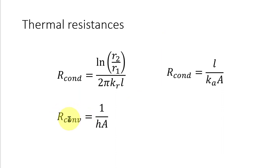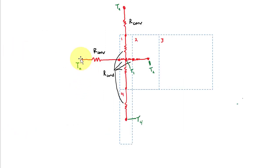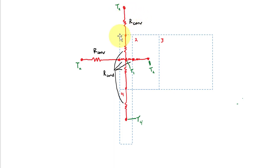Finally, we have the thermal resistance due to convection: 1 over the convection coefficient h times the surface area. Depending on which surface we're calculating, if it's the outer cylindrical surface of control volume 1 the area would be the outer cylindrical area, and if it's the top surface the area would be the top face of control volume 1.